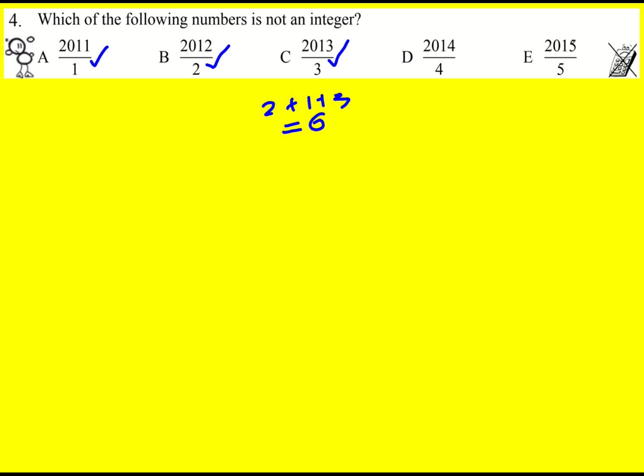And E ends in a 5 top number, so it's got to be divisible by 5. That means it must be D. Actually, for a number to be divisible by 4, you just have to look at the last two digits and see if they are divisible by 4, and 14 is not.